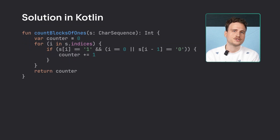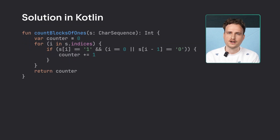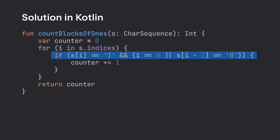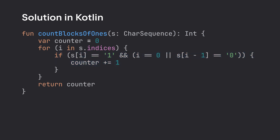Here you can see how to solve this problem in Kotlin. The function simply iterates over all indices and for each index checks whether it satisfies the condition. If it does, the counter needs to be increased.